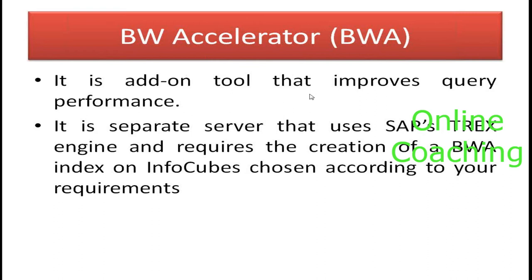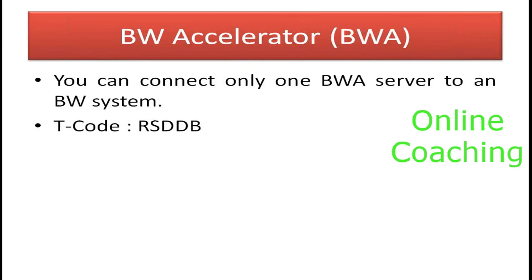Compared with HANA, BW Accelerator has many differences. It uses a separate server with SAP TREX engine and requires creation of indexes on your InfoCube or data models. The problem is it's very expensive to manage because it's a separate server not integrated with BW — one BW server connects to only one BW Accelerator server. If you have multiple BW servers, you need multiple licenses, which is very costly. Most companies chose not to go for BWA, and it's now almost outdated after HANA came into the picture.